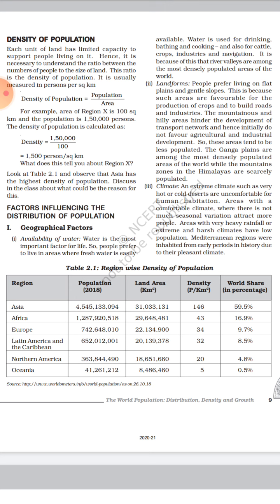The second factor is landforms. People prefer living on flat plains and gentle slopes. Mountainous and hilly areas hinder the development of transport, which discourages dense settlement.